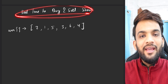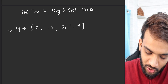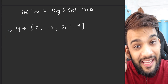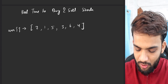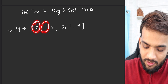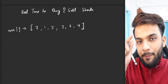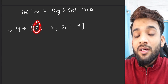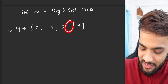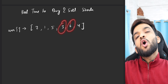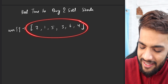Without wasting any time, let's start with the first problem: Best Time to Buy and Sell Stock. You'll be given an array of prices. On the first day the price is seven, second day one, third day five, fourth day three, fifth day six, and so on.